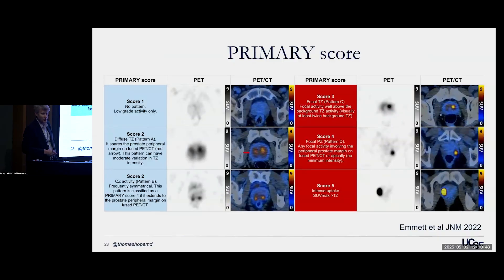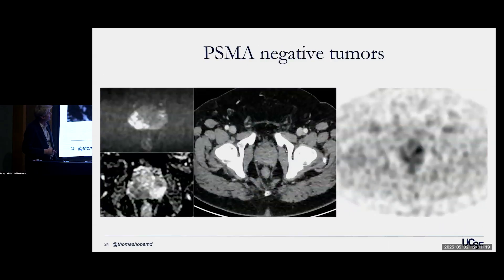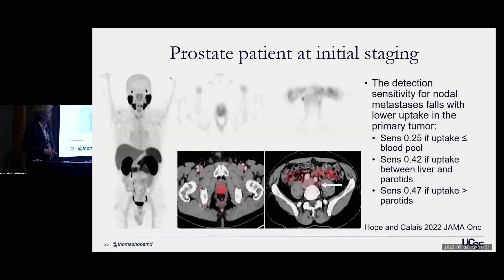We're also moving toward using PSMA PET to characterize intraprostatic disease — maybe instead of an MRI, or in select patients, instead of a biopsy, we can do a PSMA PET to exclude the presence of cancer. This is currently being studied in a phase three trial in Australia. There are also PSMA negative tumors — about 5% of patients. When there's not a lot of uptake in the primary tumor, detection sensitivity goes down in the nodes as well.